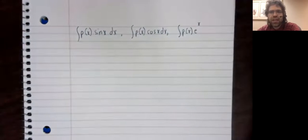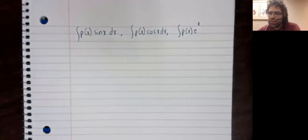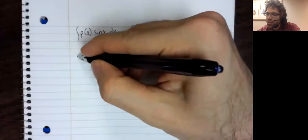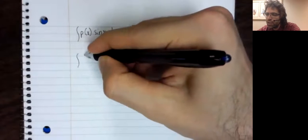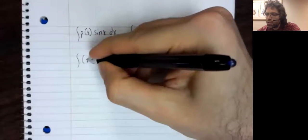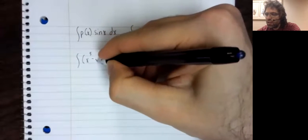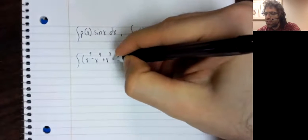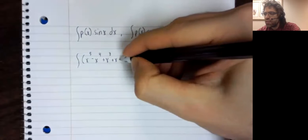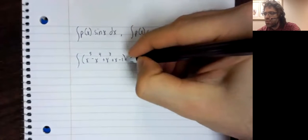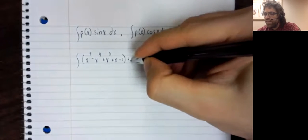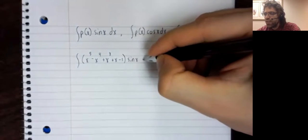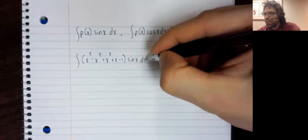Just as an example of the kind of issue you run into, suppose we've got x to the fifth minus x to the fourth plus x cubed plus x minus one times the sine of x dx.